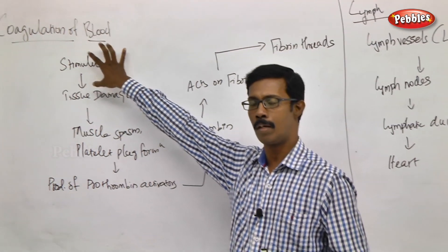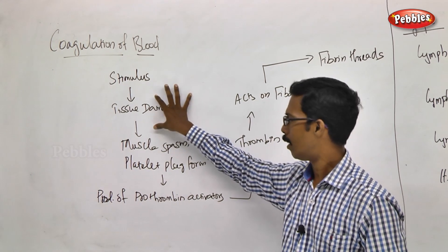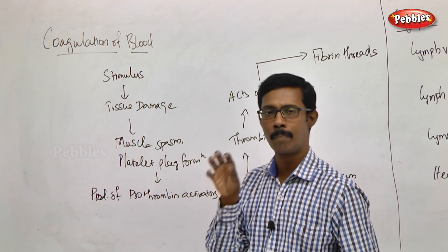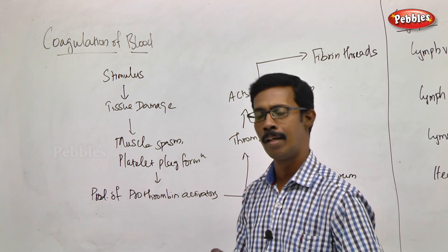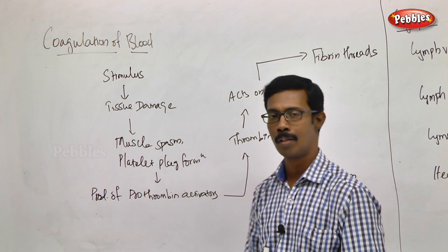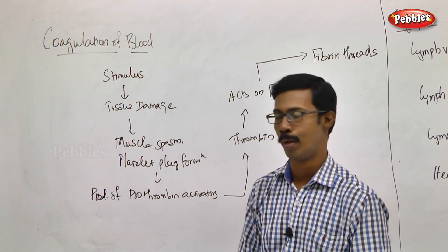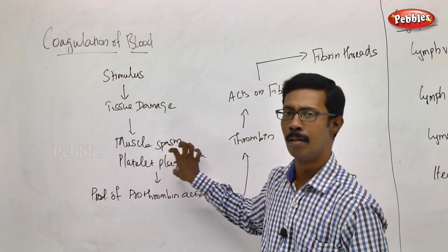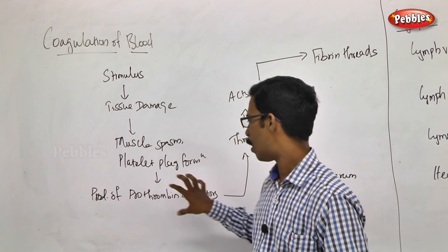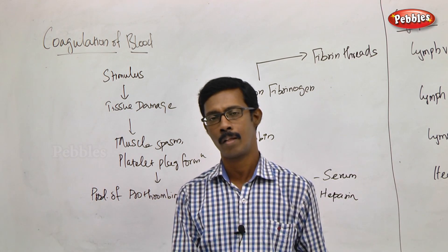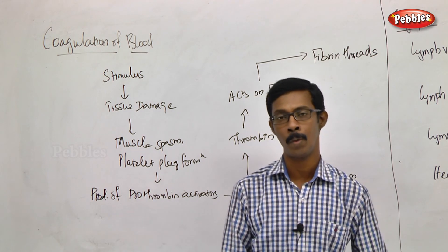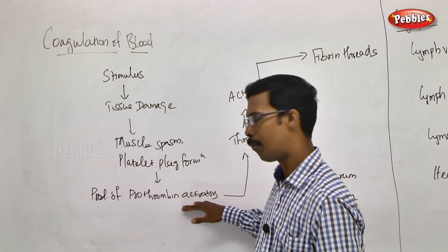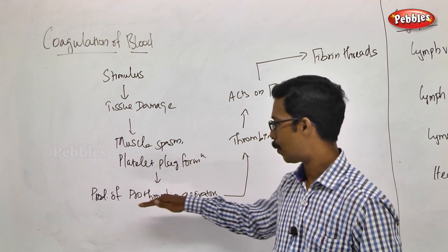So where does it start? The stimulus is tissue damage. This leads to platelet plug formation — platelets immediately deposit at the site, arresting blood flow. Signals are released to activate factors, and what is called platelet stimulation leads to the formation of prothrombin activator.